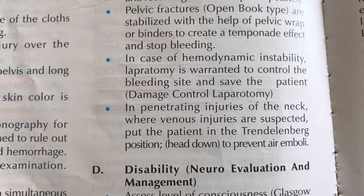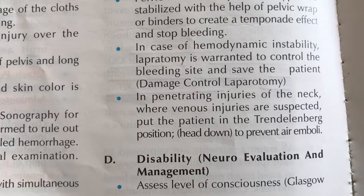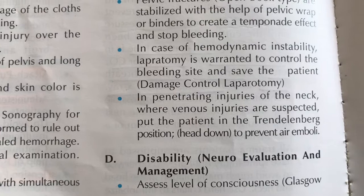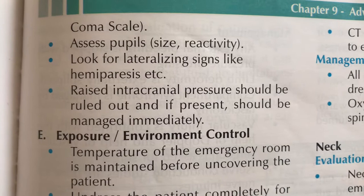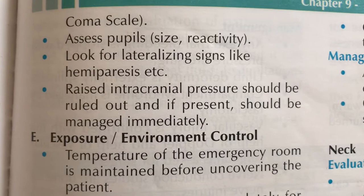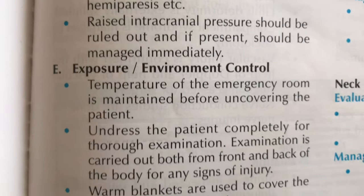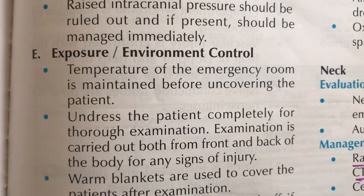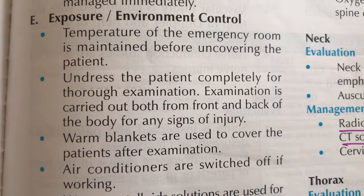Moving to Part D — Disability and Neurological Evaluation. We assess the Glasgow Coma Scale (GCS) score, measure the size and reactivity of the pupils, and check for any lateralizing signs. Raised intracranial pressure should be ruled out and managed. The patient is monitored and managed in the emergency room accordingly.